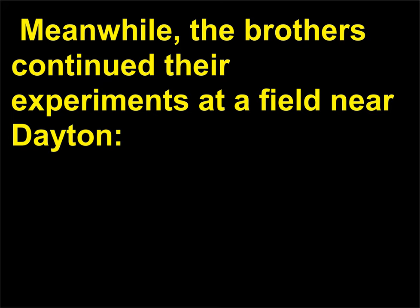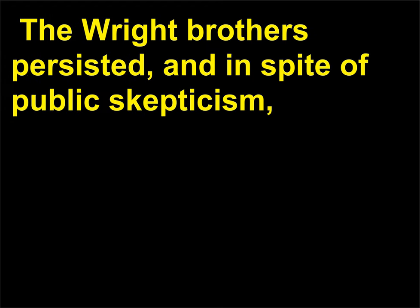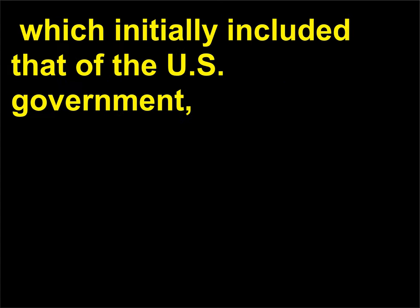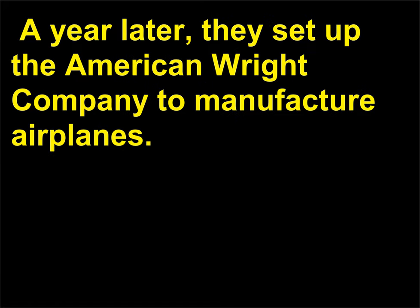Meanwhile, the brothers continued their experiments at a field near Dayton. In 1904 and 1905 they made 105 flights, but totaled only 45 minutes in the air. The Wright brothers persisted, and in spite of public skepticism — which initially included that of the U.S. government — in 1908 Orville and Wilbur Wright signed a contract with the Department of War to build the first military airplane. Only then did they receive the media attention they deserved. A year later, they set up the American Wright Company to manufacture airplanes.